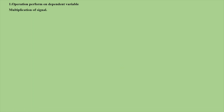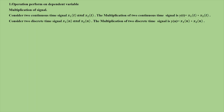Hello, everyone. Now we will see multiplication of signals. Consider two continuous time signals x1 of t and x2 of t. The multiplication of two continuous time signals is y of t is equal to x1 of t into x2 of t.